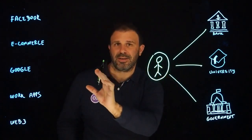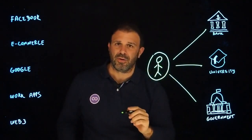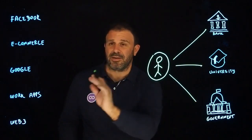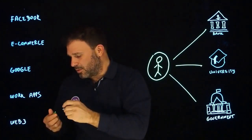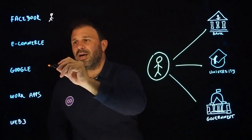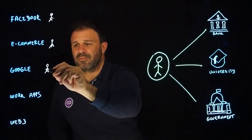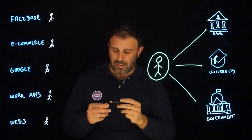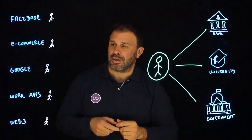Now let's compare that to the online digital identity. In the online world, you don't have one identity — you have accounts. In the internet, you don't have an identity, you have user accounts. And you have a different user account for each service or each service provider. So you are one individual for Facebook, a different person for your e-commerce site, somebody else for Google, something different in your work applications, and then you can have a completely different profile in Web3. All these identities are fragments of who you are.